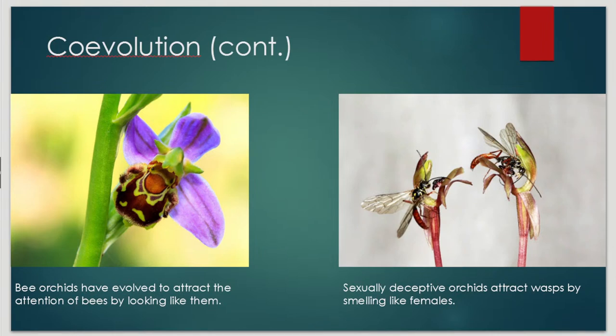Some more examples. That's a bee orchid, and doesn't it look cute? Not only is it giving off floral scent as flowers are wont to do, and not just giving off bright petal colors — blue flowers are usually pollinated by bees — but it has also evolved to look like a bee, going all out to get the attention of bees. Bees would try to mate with it and accidentally pick up the pollen, and then off they go.